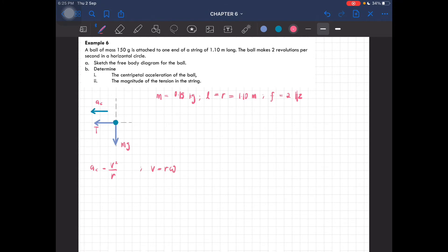So v can be calculated using the formula r omega, where omega is equal to 2π over T. So it is basically 2πr over T.